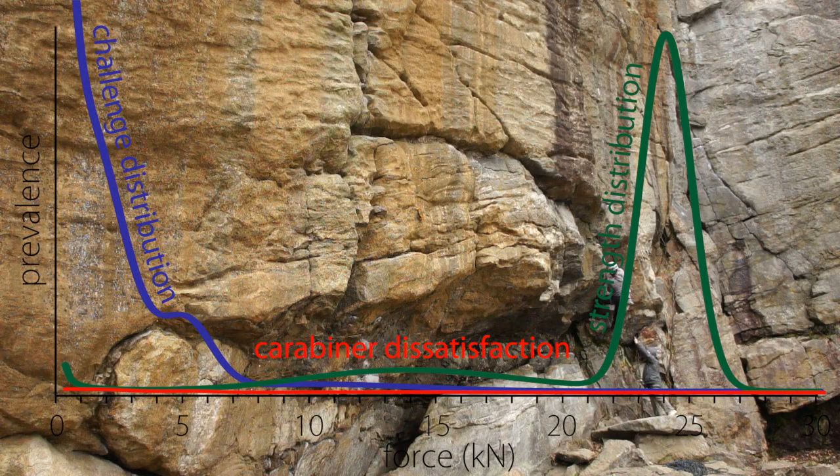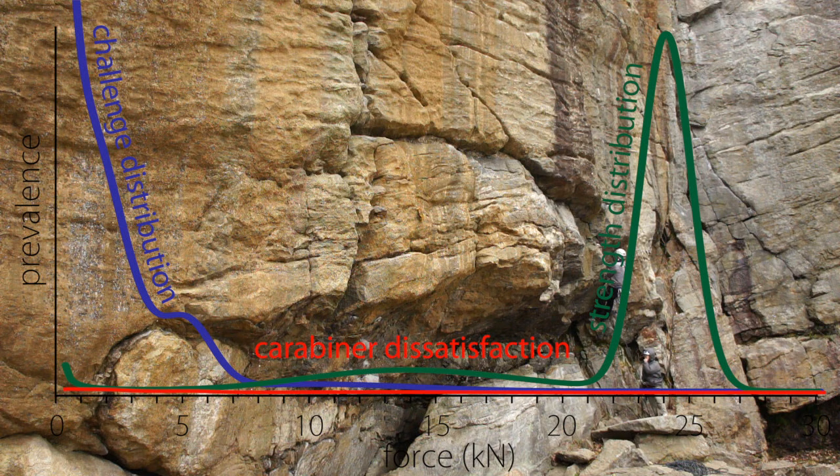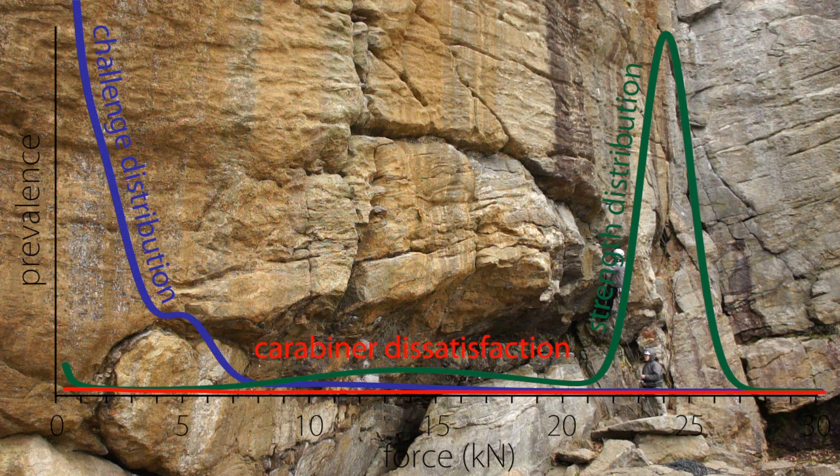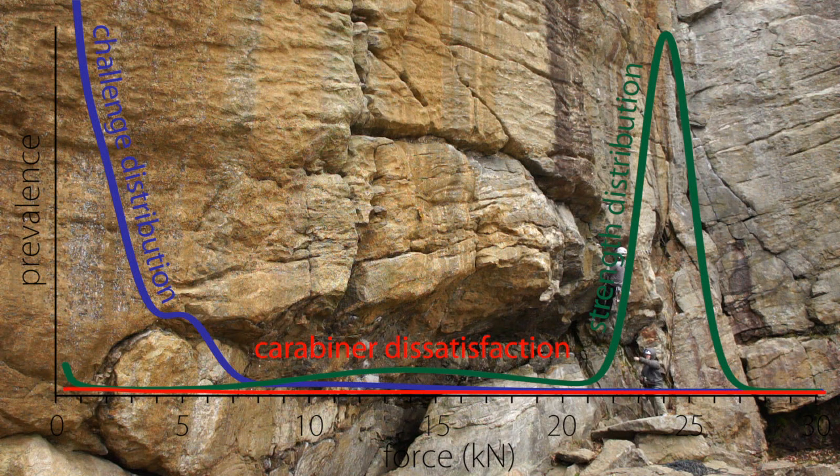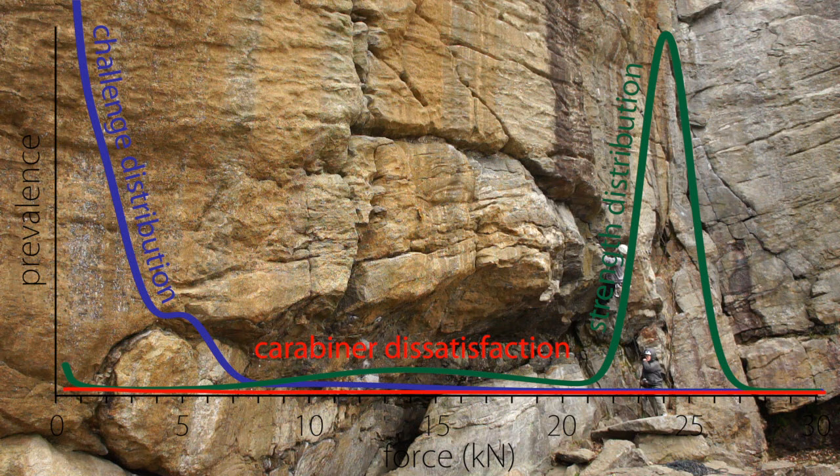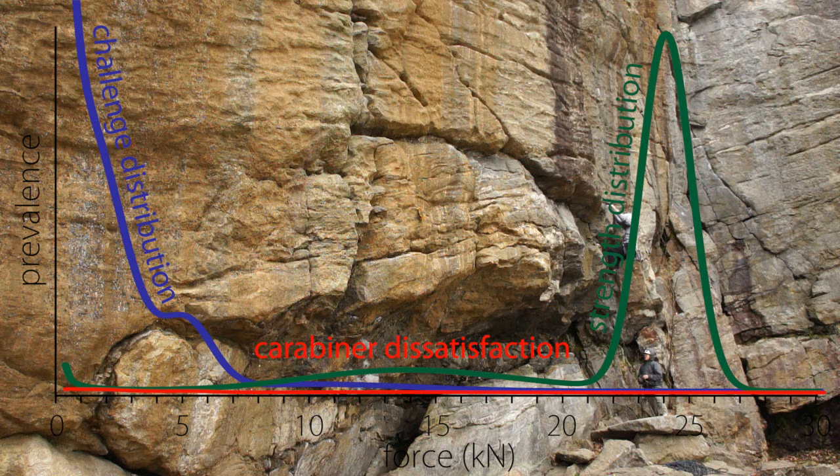Confession: The shapes of these distributions are not precisely known. They're educated guesses based on the results of a few experiments, a lot of manufacturer testing data, and anecdotal evidence from climbing accidents and incidents. What's important isn't the exact shape, but an understanding of what factors contribute to the challenge and strength distributions and how these distributions combine into dissatisfaction.